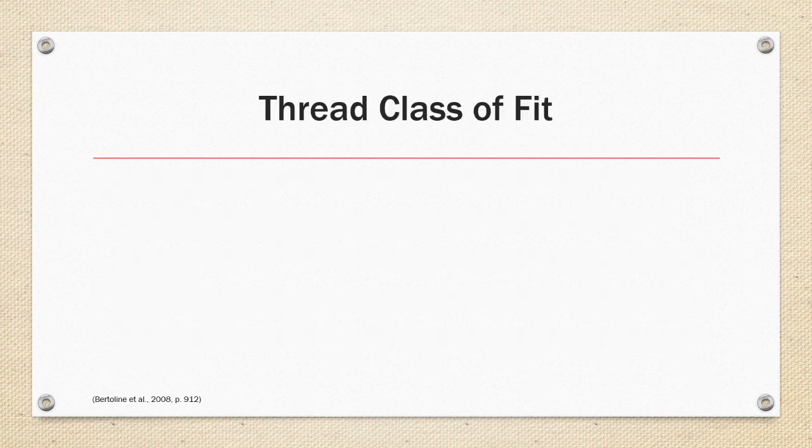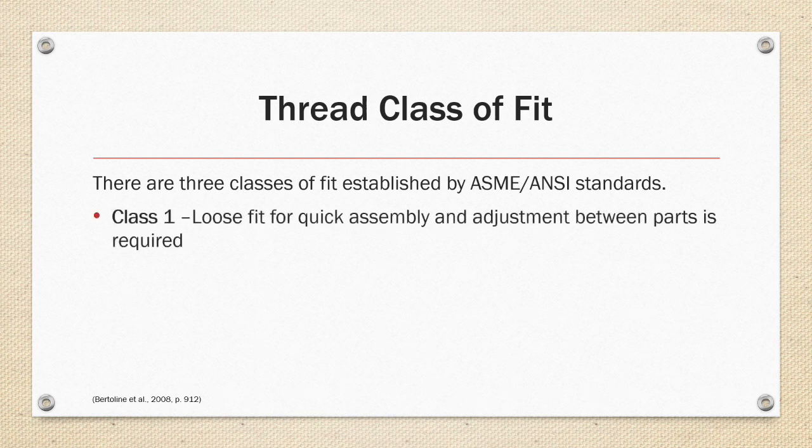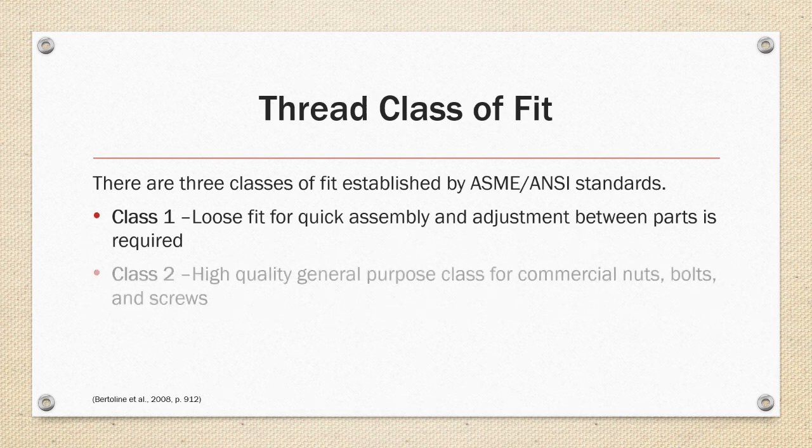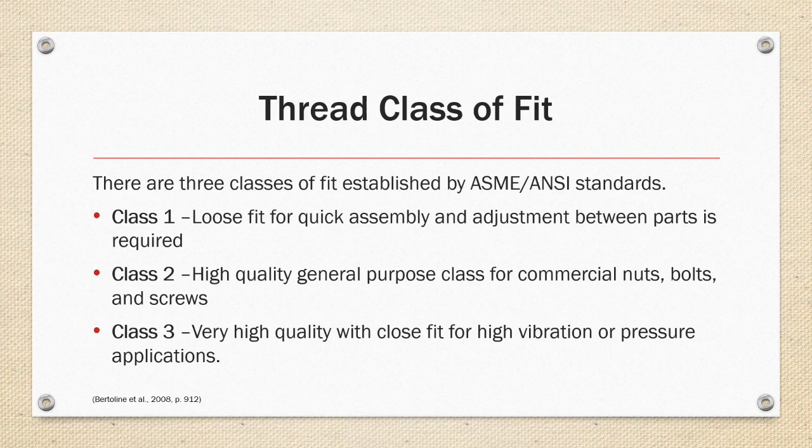Thread class of fit. There are three classes of fit established by ASME ANSI standards. Class one is a loose fit for quick assembly and adjustment between parts. Class two is your general purpose high quality thread like you would find in a commercial hardware store for nuts, bolts, and screws. Class three is a very high quality with close fit for high vibration or pressure applications.